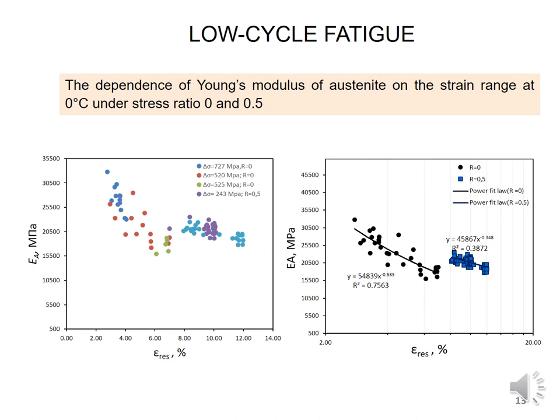The figures show the dependence of the modulus of elasticity of austenite on residual strain for different stress ratios. At the same value of residual strain, the modulus of elasticity at stress ratio 0 and stress ratio 0.5 are significantly different. This indicates that the modulus of elasticity and elastic strain energy depend on amplitude under the same values of maximum stress.